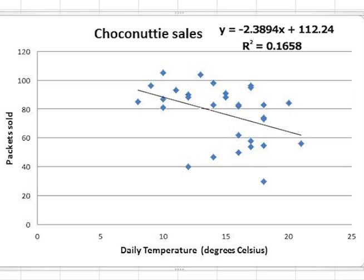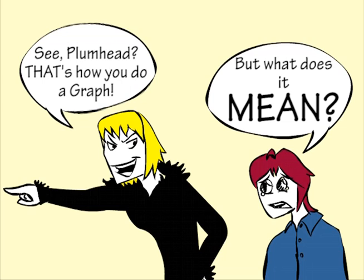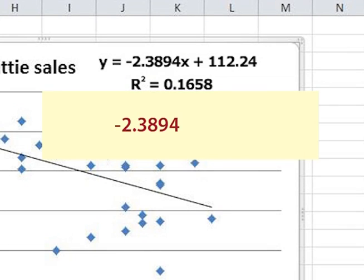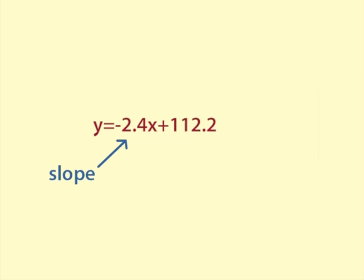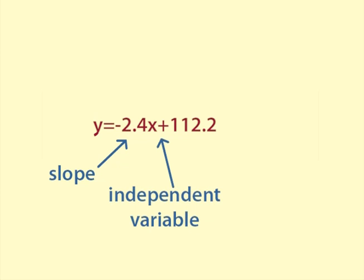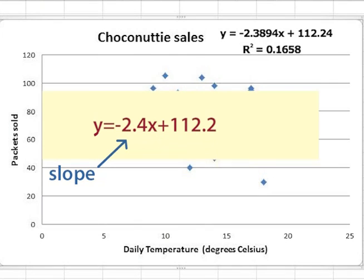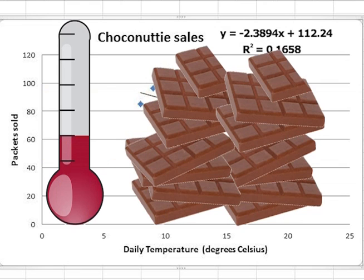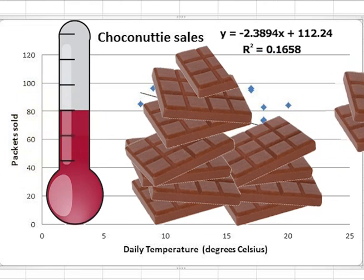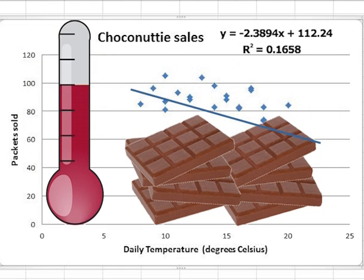And there we have fitted a straight line to the data as Helen requested. We still need to explain what it means. In the equation are two numbers: negative 2.3894, which we will round to negative 2.4, and 112.24, which we will round to 112.2. Negative 2.4 is the slope of the line — we can tell this because it is the value that the x, or independent variable, is multiplied by. The slope value, negative 2.4, also known as the coefficient of x, tells us that for each extra degree of temperature the daily sales decreased by 2.4 packets of Choconuttis on average. We say it has decreased because it has a negative slope.